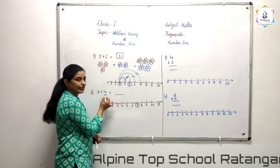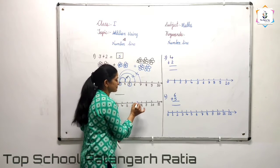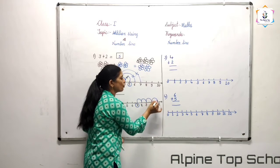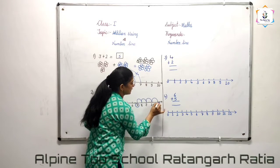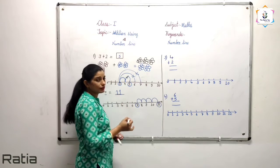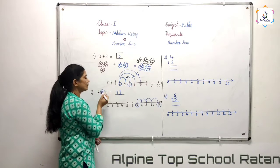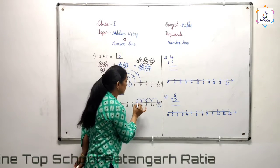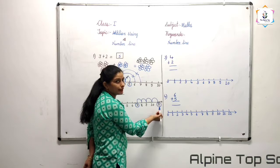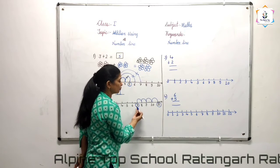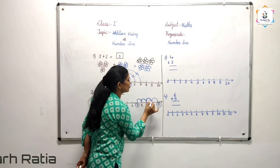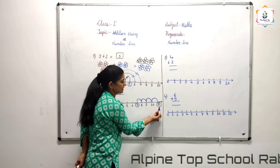What is the second number? The second number is 4, so we have to move 4 steps: 1, 2, 3, 4. We move 4 steps and the answer is 11. Remember, the answer will be bigger than the first number. We have to move to the right side only, and 11 is the answer.